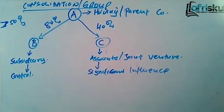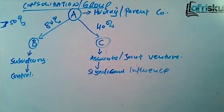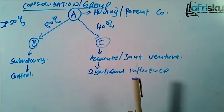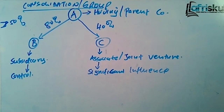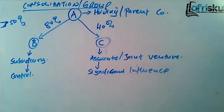That means for a subsidiary you can control them, but for an associate you cannot control them — you can only have what you call significant influence. Significant influence means you can participate in their financial matters, operating matters, and you have your representation on the board. With control, it's like being a dictator — you can dictate to them. But with an associate, you cannot dictate to them; you just have significant influence.